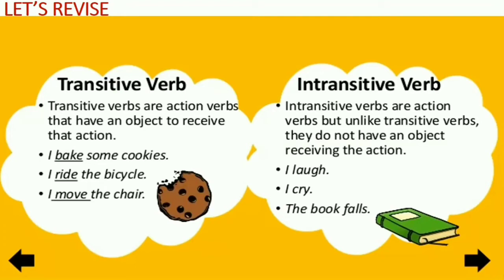For example: 'I bake some cookies.' After the verb, ask yourself the question 'what.' I bake what? Some cookies. You are getting an answer to the question 'what.' Next example: 'I write the bicycle.' I write what? Again, you are getting an answer. 'I move the chair.' I move what? Again, you are getting the answer: the chair. So when you get an answer to 'what' or 'whom,' those are transitive verbs.